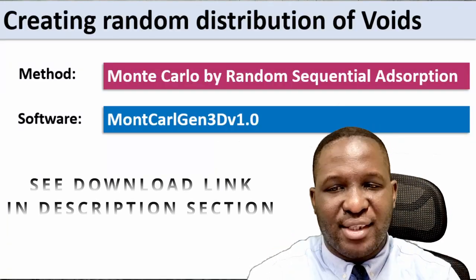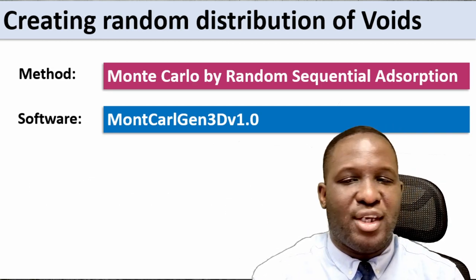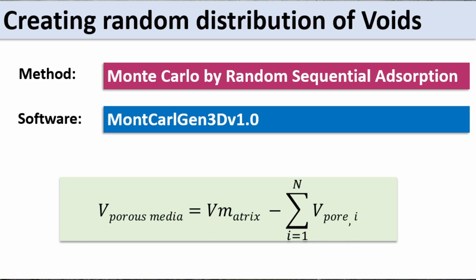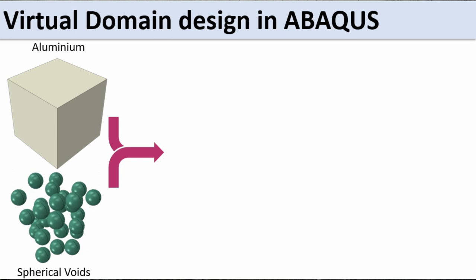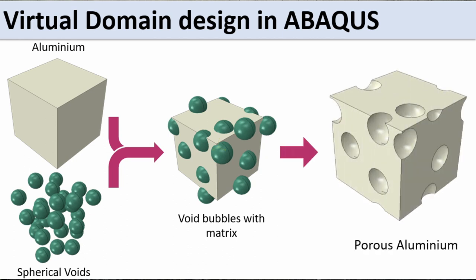I'm using a software called MonteCarlo Gen 3D Version 1.0, which implements the Monte Carlo approach for a 3D domain, with spheres as the inclusion type. To calculate the volume of the pores, we get the volume of the matrix and subtract the cumulative volume of the pores. Basically, we start with aluminium, create the voids, merge them, and then extract the voids from the aluminium matrix to create the voided porous aluminium.